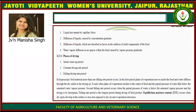The phases of drying are: first, the initial warm-up period; then the constant drying rate period; and the falling drying rate period. In hygroscopic food material, more than one falling rate period occurs. In the first falling rate period, the plane of evaporation moves inside the food and water diffuses through the dry solids to the drying air. It ends when the plane of evaporation reaches the center of the food and the partial pressure of water falls below the saturated water vapor pressure. The second falling rate period occurs when the partial pressure of water is below the saturated vapor pressure and drying is by desorption.